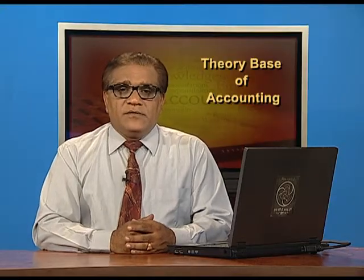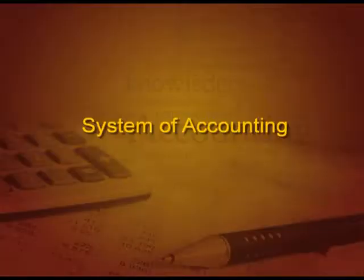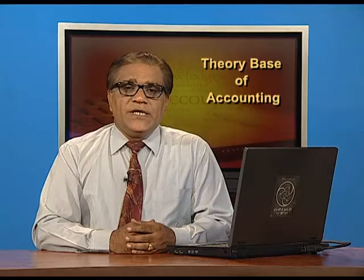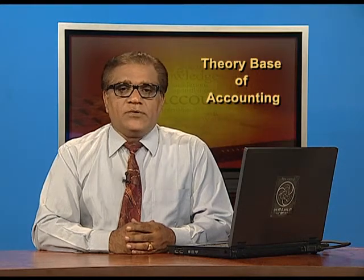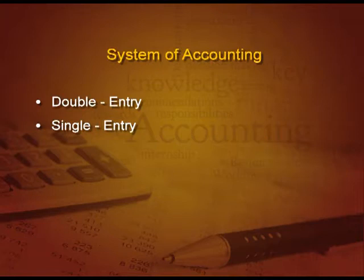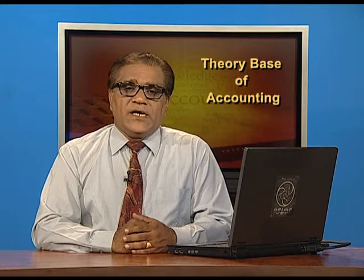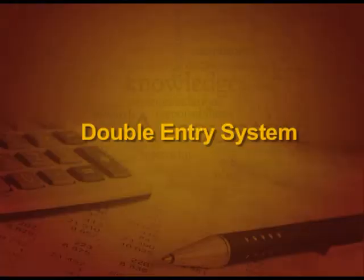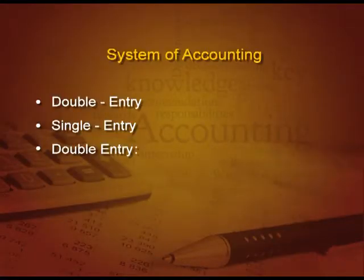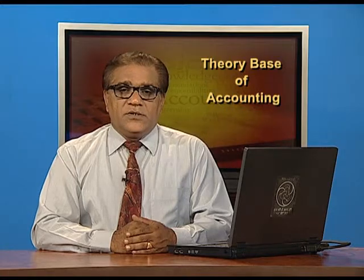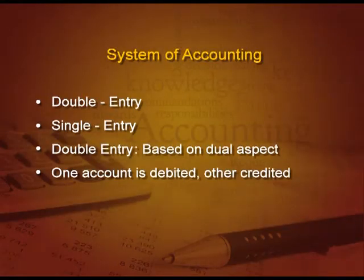Now let us start with a new topic: the system of accounting. There are two systems of accounting — first, double entry, and second, single entry. We will study both systems in our syllabus, but mostly accounts are made on the double entry system. Double entry means accounts are based on dual aspect, meaning one account is debited and the other is credited.